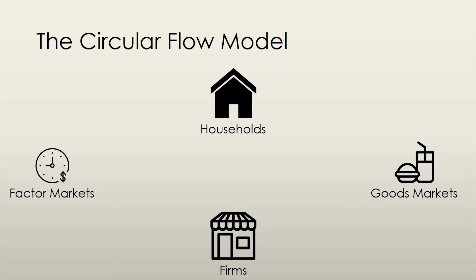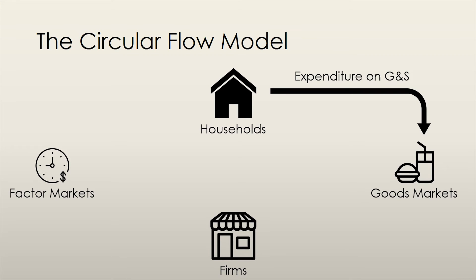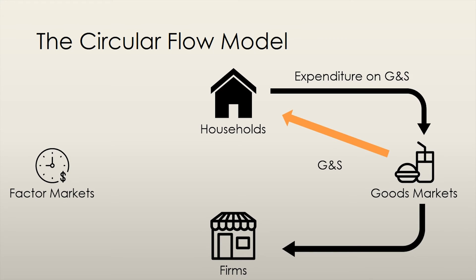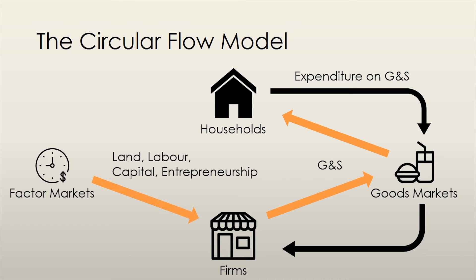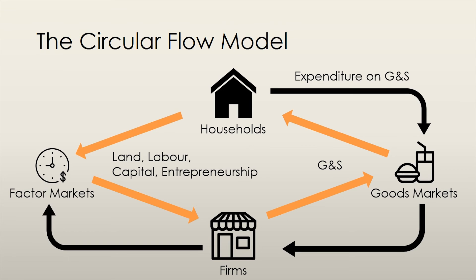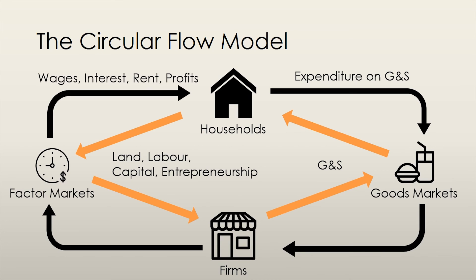The circular flow works like this. Households spend money in the goods market, and this money goes straight to firms, as firms are the sellers of these goods. Households in return for their spent money get some good or service, which comes directly from the firm. In order to produce the goods, the firm needs to buy resources from the factor markets. It is households that provide the resources of land, labor, capital, and entrepreneurship. The firm must buy these resources from the factor markets, so it spends its money over there. At the end of the day, households are selling the factors of production so the money goes back to them.